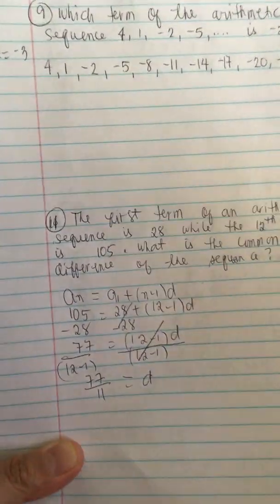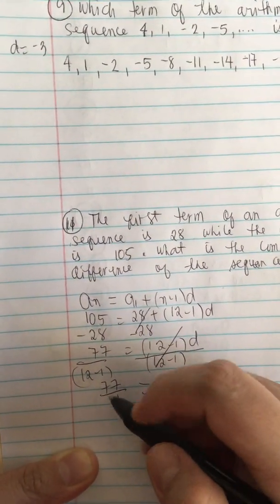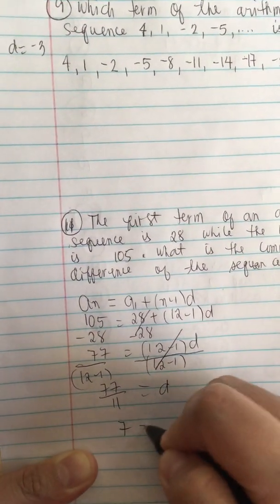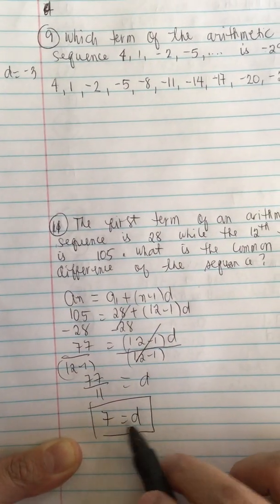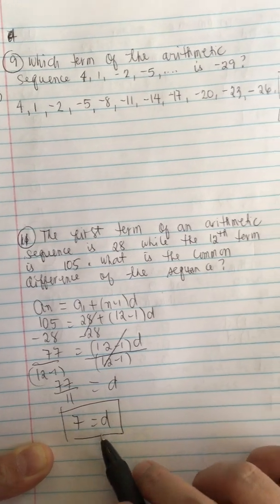So now 77 divided by 11 is equal to d. So this is cancel. So 77 divided by 11 is equal to 7. So now we know that d is equal to 7. So this is the answer.